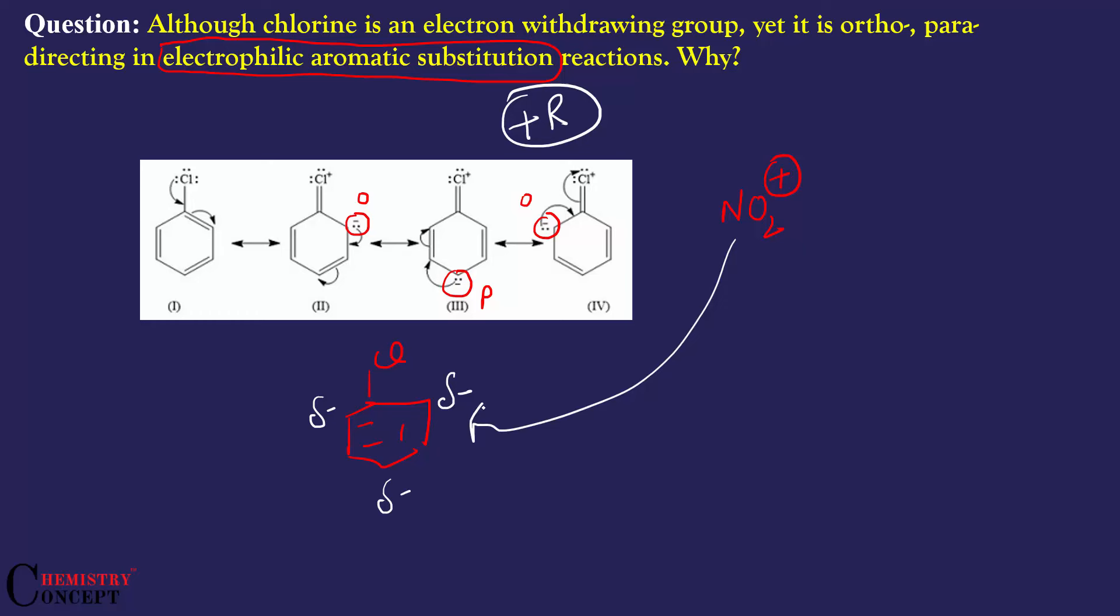So chlorine is ortho-para directing because of resonance and +R effect. But at the same time, chlorine is ring deactivating. Being an electronegative atom, chlorine pulls electron density from the benzene ring, creating partial negative charge on chlorine and partial positive charge on benzene. On one hand, chlorine increases electron density through resonance.